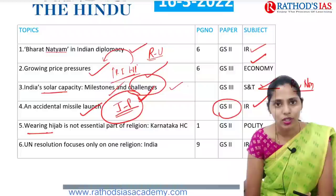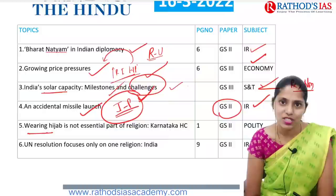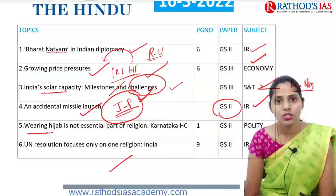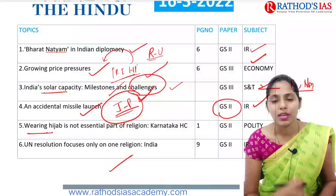Next topic is about the Karnataka High Court verdict on Hijab. There are many articles in today's newspaper talking about concerns regarding this verdict — we will see the background. Next topic is regarding a United Nations resolution that focuses only on one religion, according to India. It is talking about an international day regarding Islam, important from International Relations, GS Paper 2.